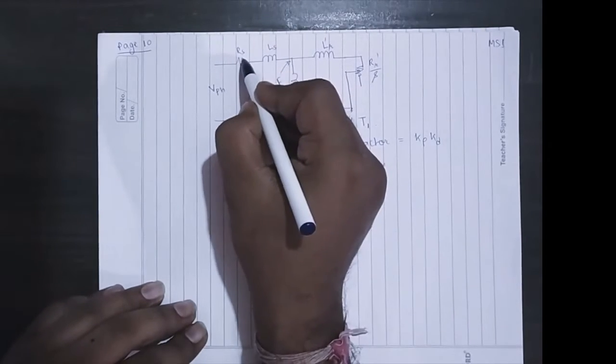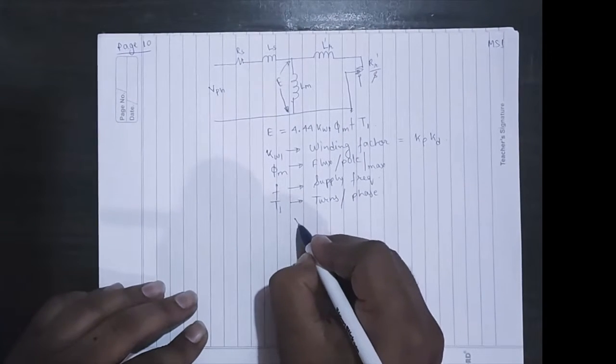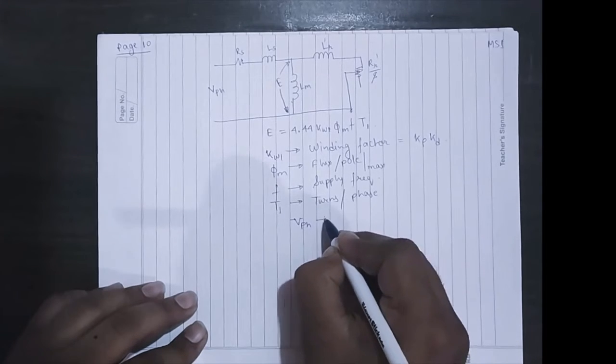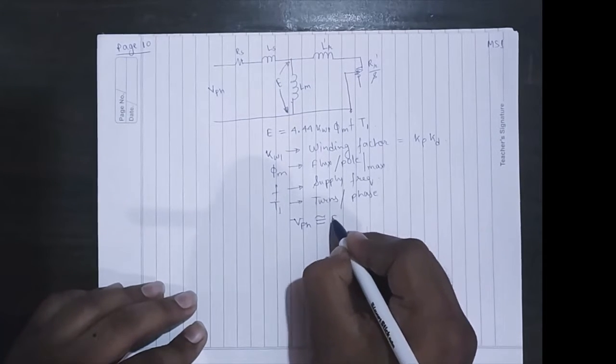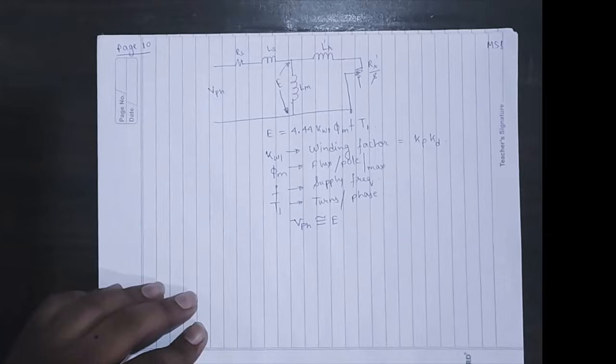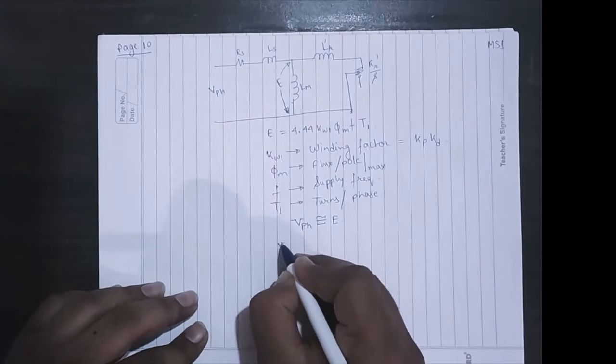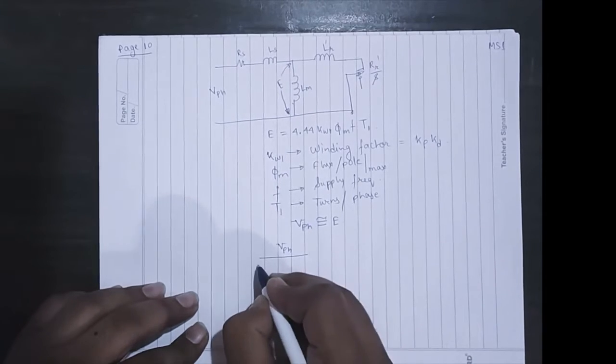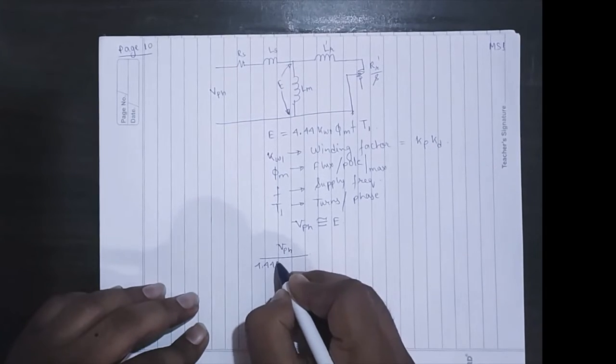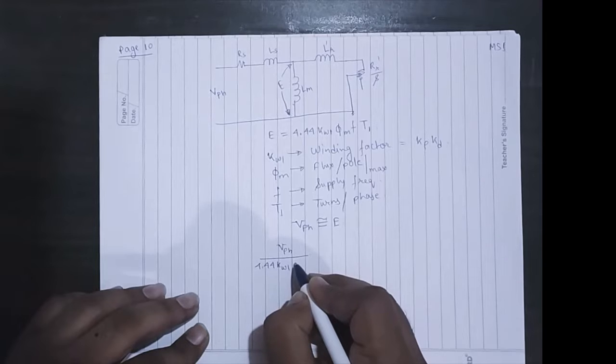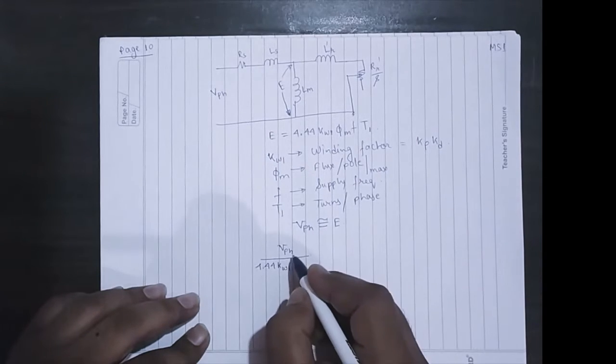Generally you don't have any access to this E, so we can consider that V_phase is almost equal to E because the resistive drop is very less. From the above equation we can write, replacing E by V_phase.